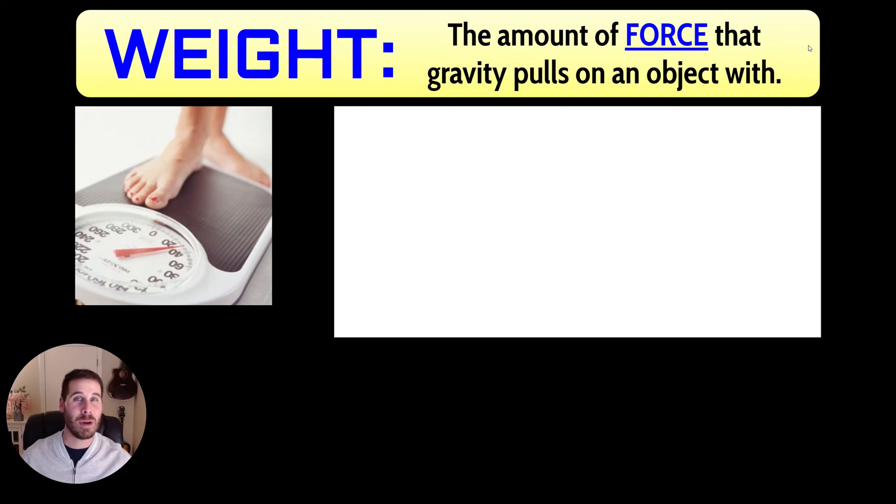Well, weight is actually a type of force. It's a push or a pull, specifically a pull caused by gravity. So weight could be defined as the amount of force that gravity pulls on an object with. I'm going to give you a couple examples of how to think about weight so you know how to make it different in your mind from mass. Well, first, you should know that gravity pulls down on all objects that have mass.